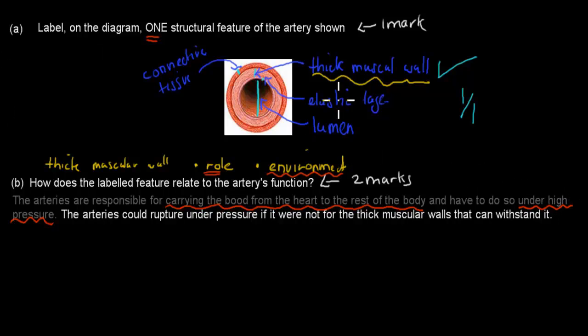And the structure of it was the arteries could rupture under pressure if it were not for the thick muscular walls that can withstand it. So these thick muscular walls, the structure, relates to the actual function because it has to be able to withstand that high pressure to be able to pump blood or transport blood from the heart to the rest of the body. And without that thick muscular wall, there would be ruptures. And rupture, that obviously just means that you would have holes in the actual muscle, in the muscular wall. And if there would be holes in it, that would mean that blood would go other places, and it's not meant to.